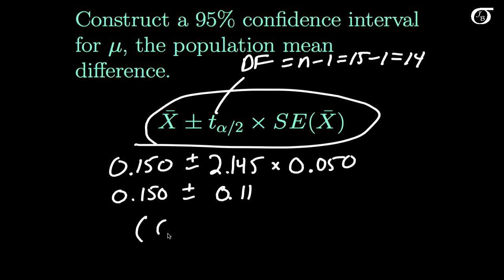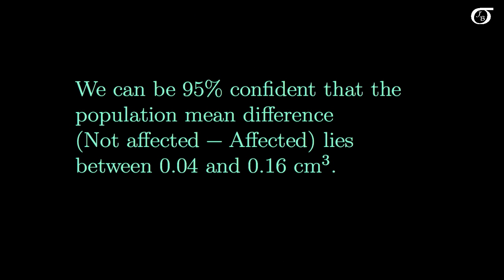If I carry that subtraction out, in addition, I get 0.04 to 0.26. That is a 95% confidence interval for mu, the population mean difference. I can be 95% confident that mu lies somewhere within that interval. In the context of this problem, that means we can be 95% confident that the population mean difference for the not affected twin minus the affected twin lies between 0.04 and 0.16 centimeters cubed.